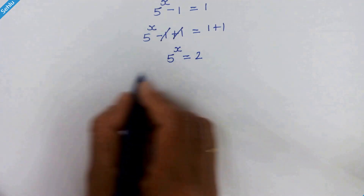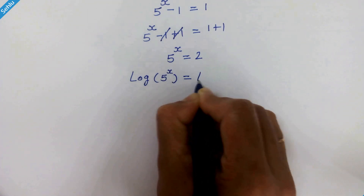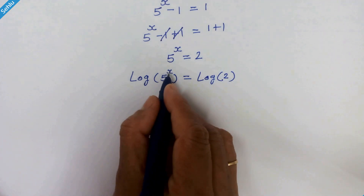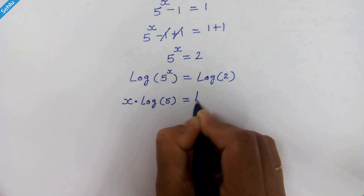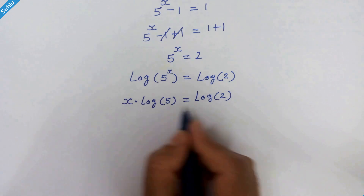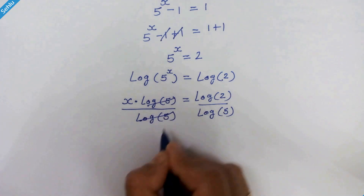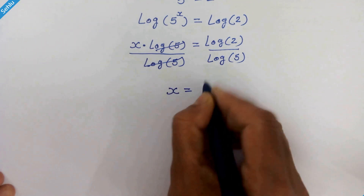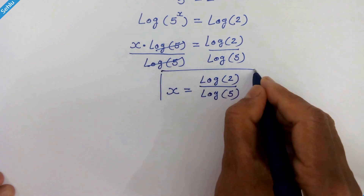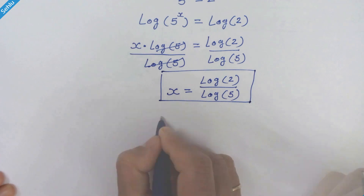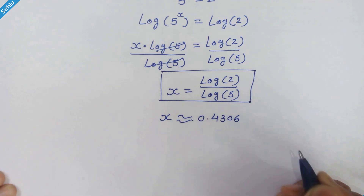From here we need to take log of both sides, so we have log of 5 raised to x is equal to log of 2. This x can be brought down, so we have x times log of 5 is equal to log of 2. Dividing both sides by log of 5, these cancel out and x is equal to log 2 divided by log 5, which is approximately 0.4306.